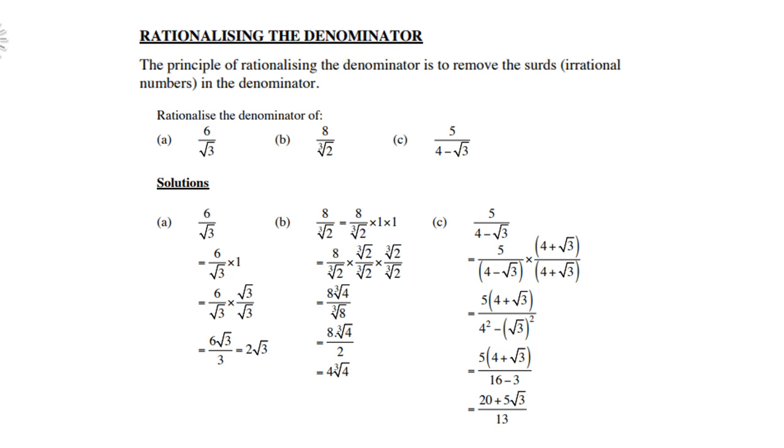Look at B. Now we're dealing with cube root. Here you have to multiply with this cube root of 2 twice because I want to end up with the cube root of 8 in the denominator. Why? Because then it becomes rational. If I only multiply once with cube root 2, then it's not going to work, so please take note of it.